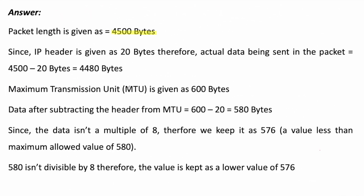The packet length is 4500 bytes and 20 bytes is the IP header, so the actual amount of data being sent is 4480 bytes. The maximum transmission unit is only 600 bytes, so we can only send 600 bytes per packet. Data per fragment after subtracting the header from MTU is 600 minus 20, equal to 580 bytes. The MTU includes a header, so 580 bytes is the actual data being sent per fragment with an MTU of 600.